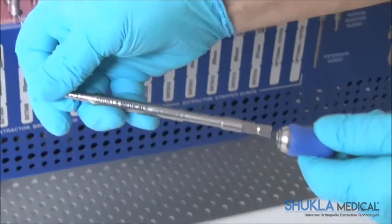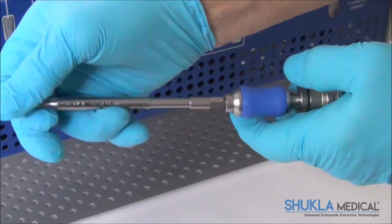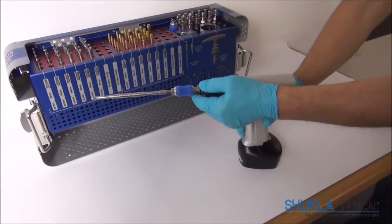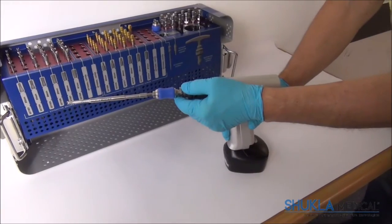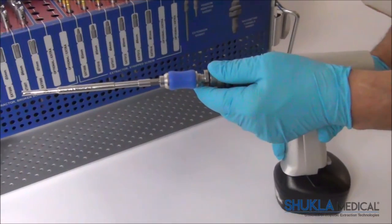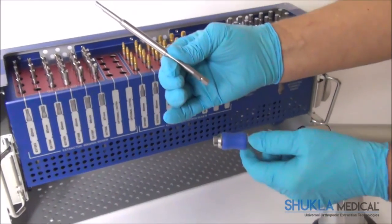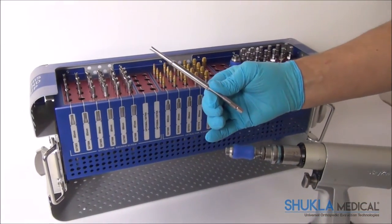After the broken screw extractor is connected to the driver, it is turned in a counterclockwise direction over the broken screw until the threads inside the extractor engage and lock onto the screw. Then, the screw is removed by continuing to turn the extractor in a counterclockwise direction.